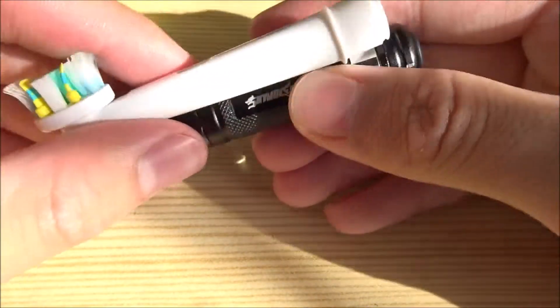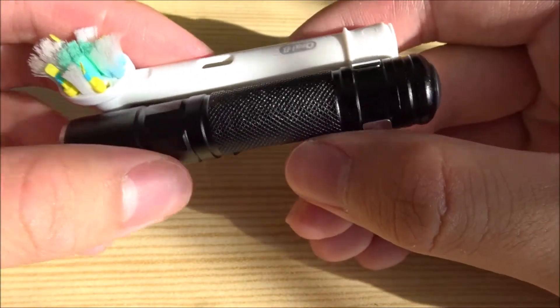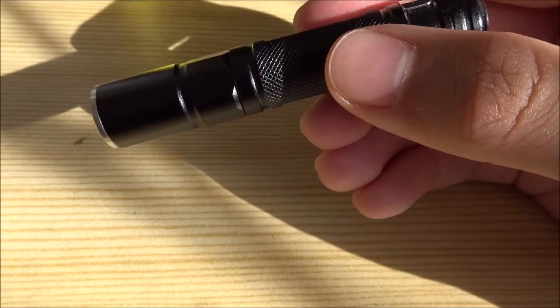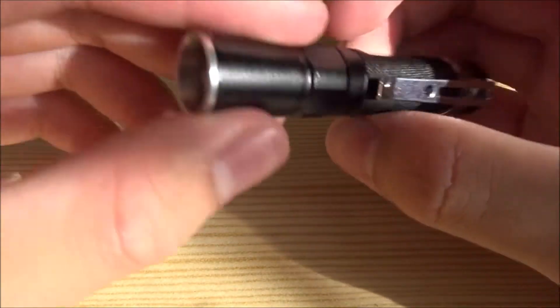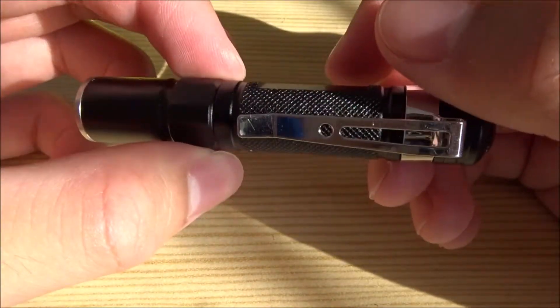Very small, about the size of a toothbrush. Here's a toothbrush for comparison. Yeah, so perfect for your EDC. You're just going to chuck it in your pocket, you won't even realize it's there.